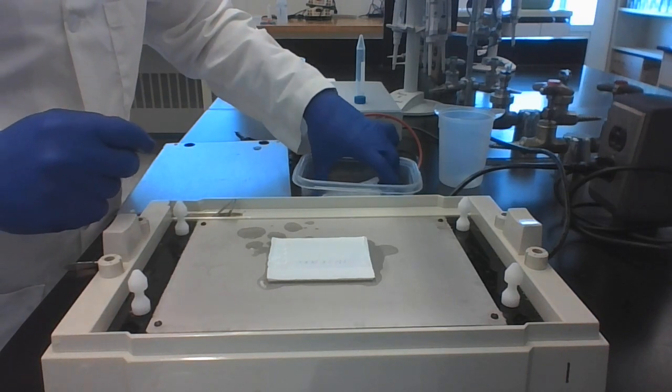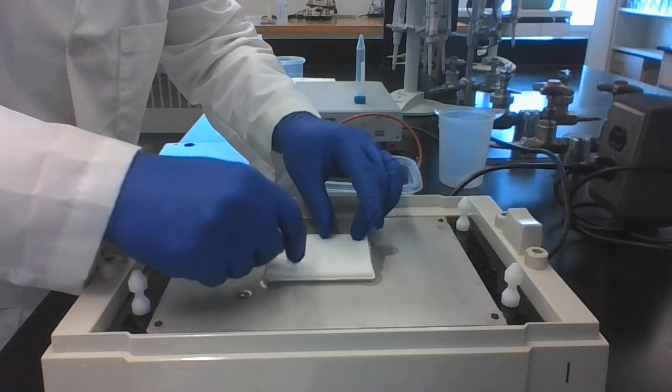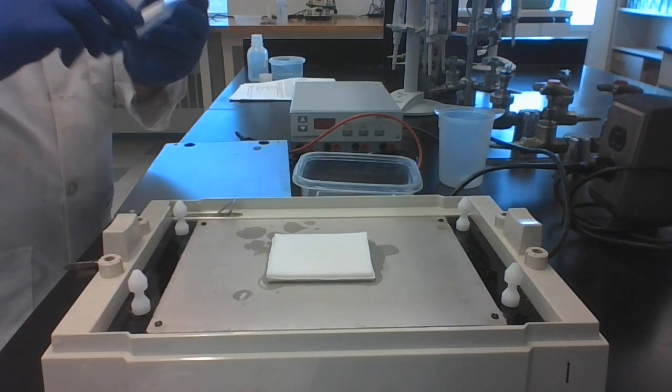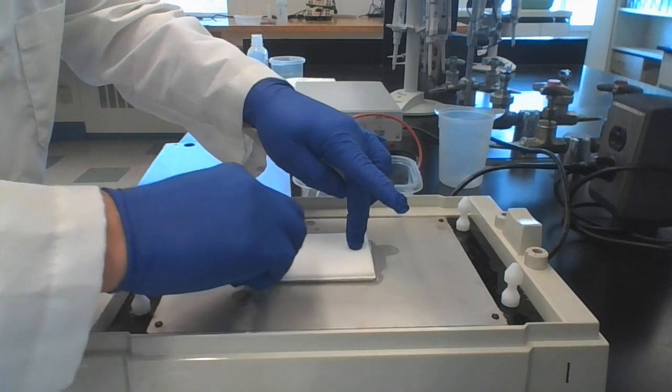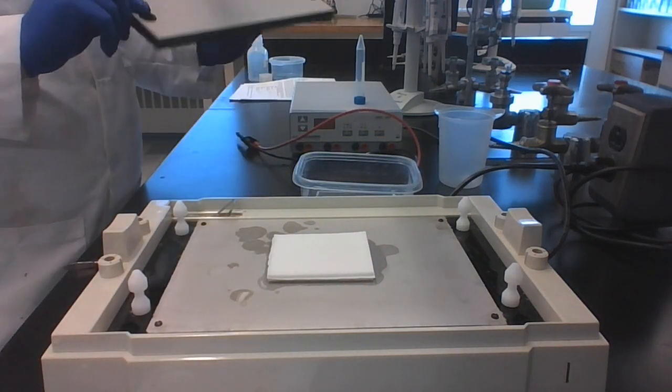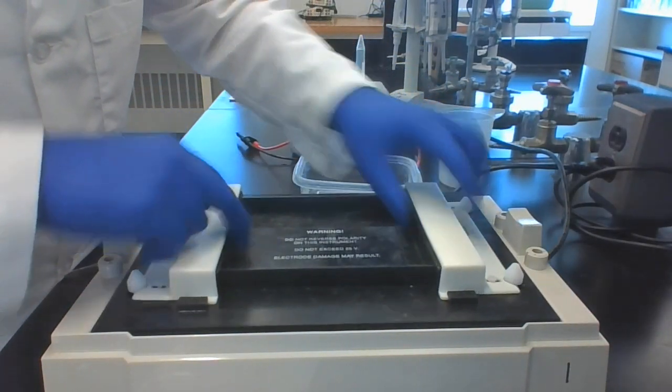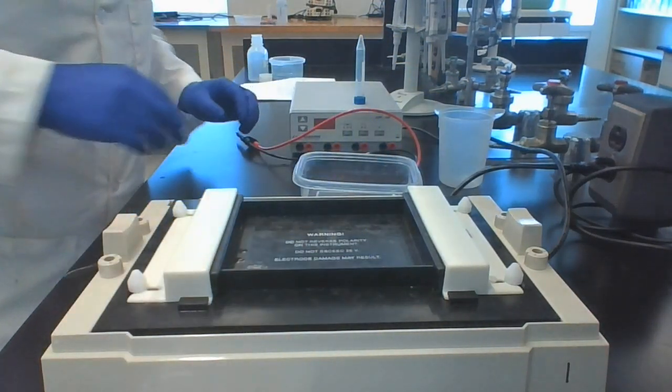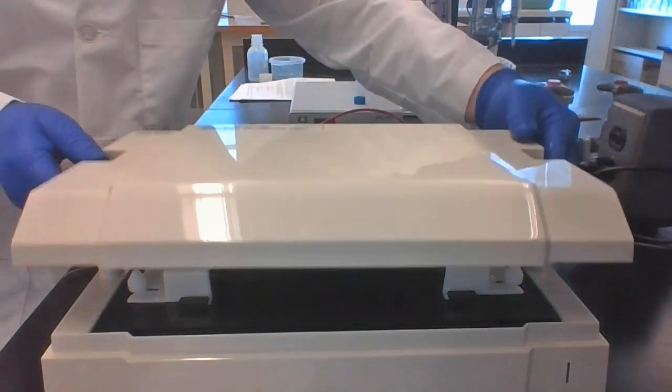On top of all that goes the next filter paper. Once this is all together, we just take our tube and we make sure that we roll out any of the bubbles. We then place our negative electrode on top.